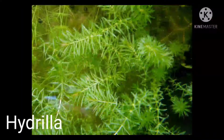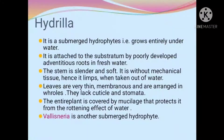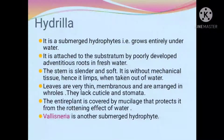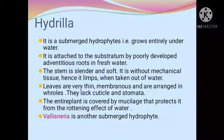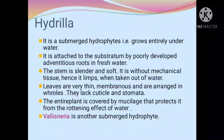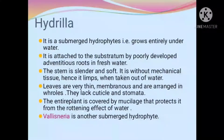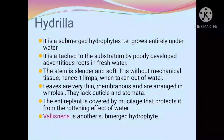The first hydrophyte is hydrilla. It is a submerged hydrophyte — it grows entirely underwater. It is attached to the substratum by poorly developed adventitious roots in fresh water. The stem is slender and soft, without mechanical tissues, so it limps when taken out of water. Leaves are thin, membranous and arranged in whorls. They lack cuticle and stomata. The entire plant is covered by mucilage that protects it from the putrefying effect of water.